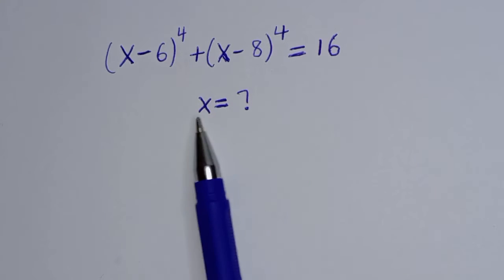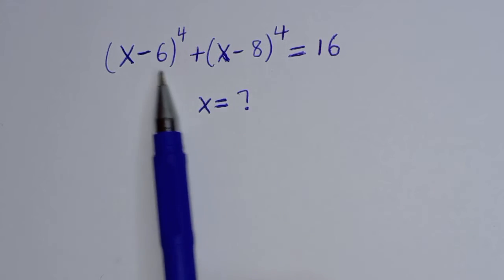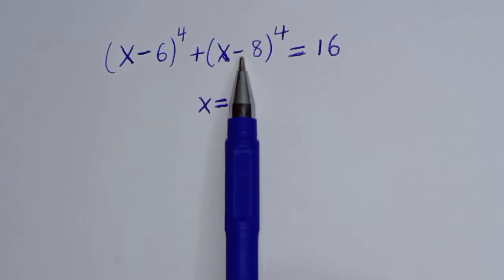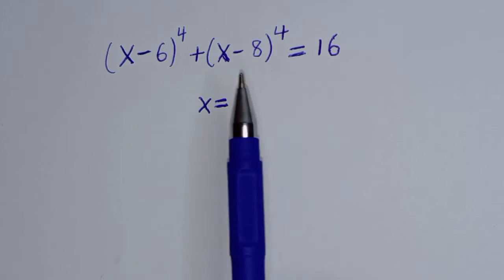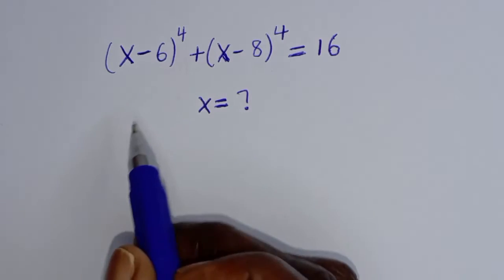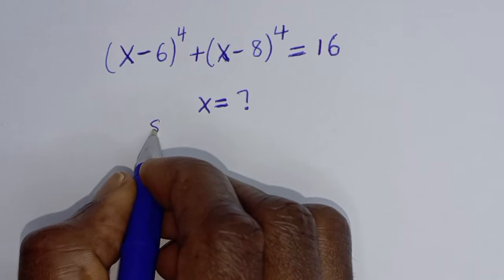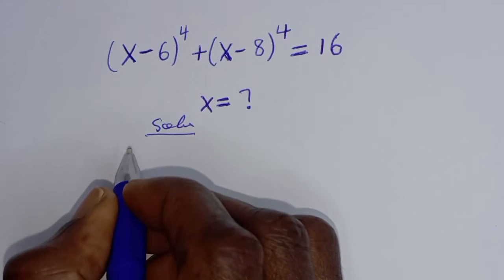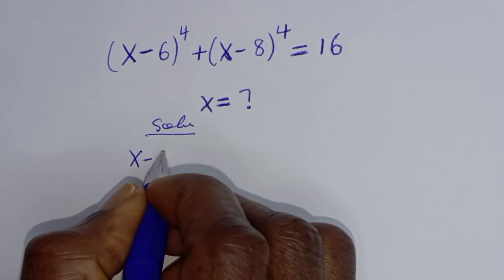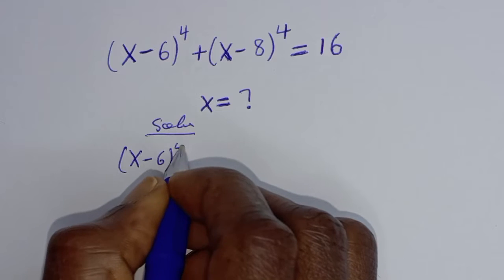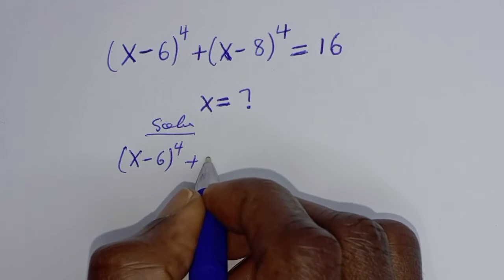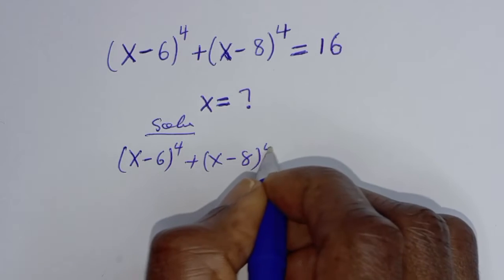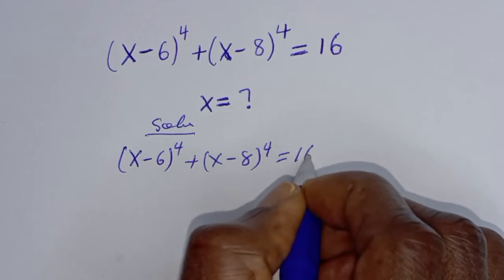Hello. How to solve for x from this given nice math problem: (x minus 6) to the power of 4 plus (x minus 8) to the power of 4 is equal to 16. Solution.